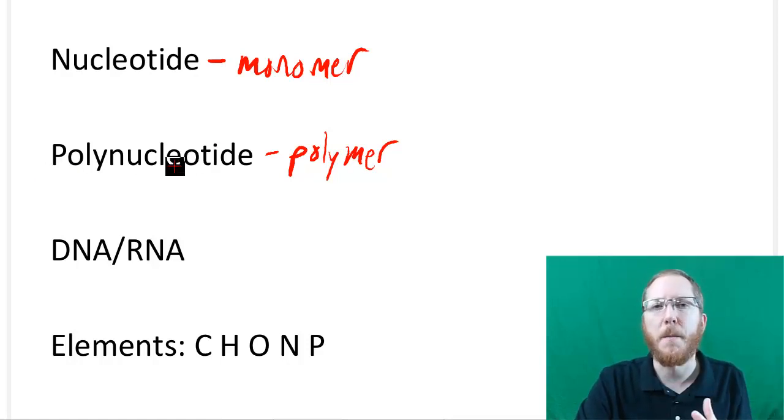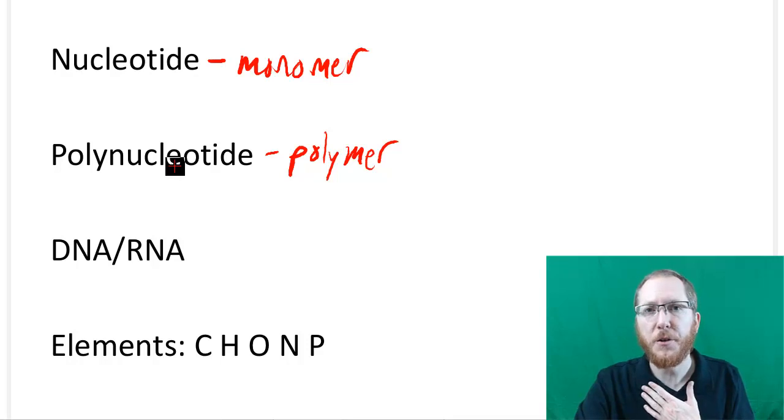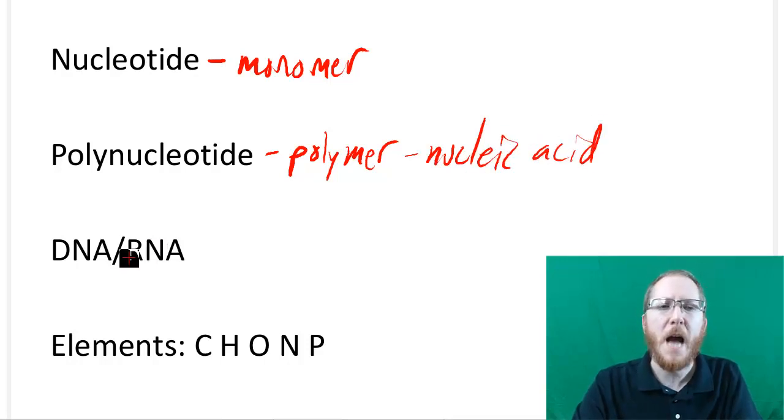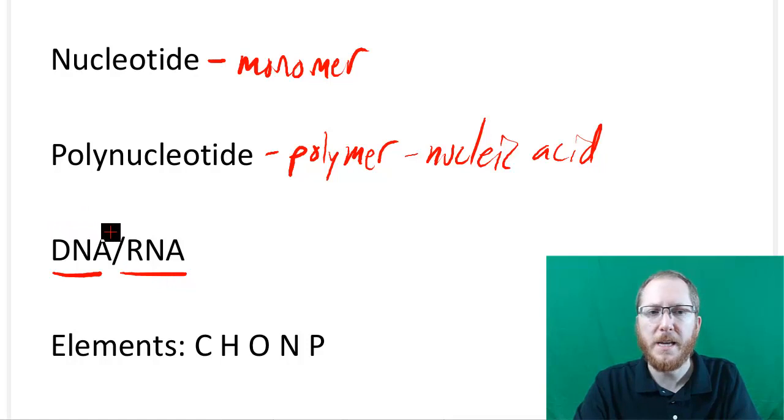I'm bringing up both terms because I might use either term, and I don't want you guys to get confused during a test, a quiz, or in class. They basically are the same thing. And then the two common types we'll discuss will be DNA and RNA - deoxyribonucleic acid and ribonucleic acid.